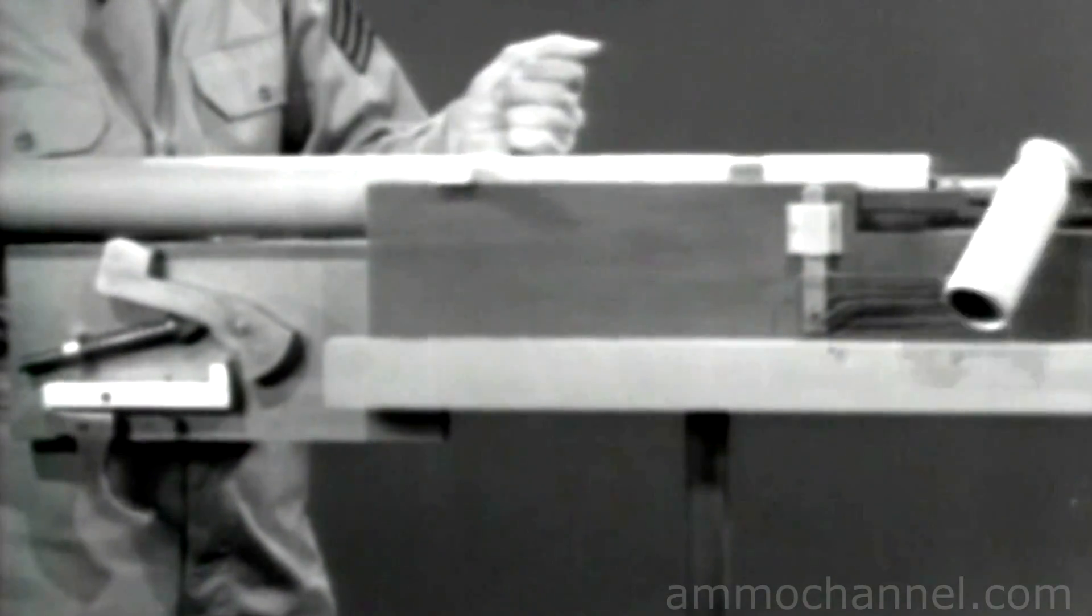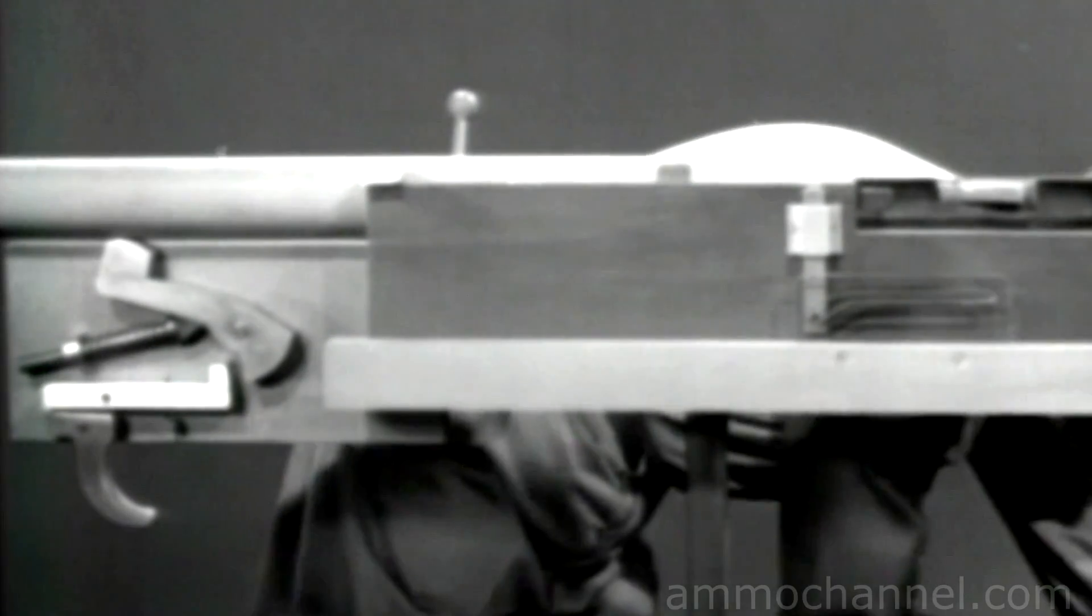Now, when a round is fired, recoil sends the barrel, barrel extension and bolt to the rear. At the same time, the catch is cammed down and the bolt is unlocked. The barrel extension strikes the receiver, stops and the bolt continues to the open position.